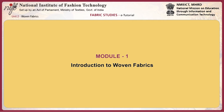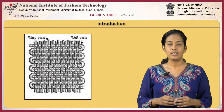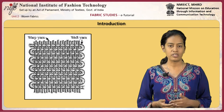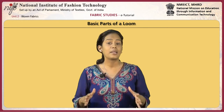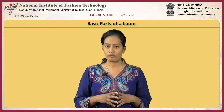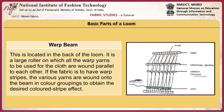The first module gives an overview of woven fabrics and the basic motions of weaving. Woven fabrics are made in a machine called a loom by interlacing warp and weft perpendicular to each other. The warp beam is located in the back of the loom. It is a large roller on which all the warp yarns to be used for the cloth are wound parallel to each other.